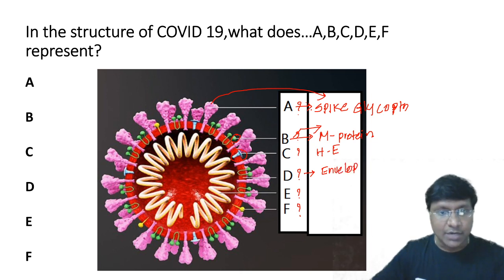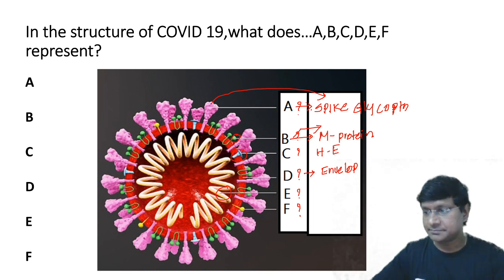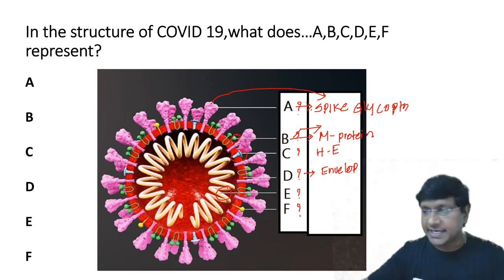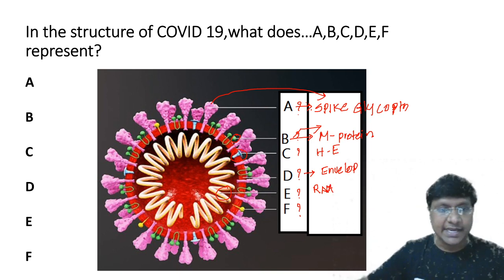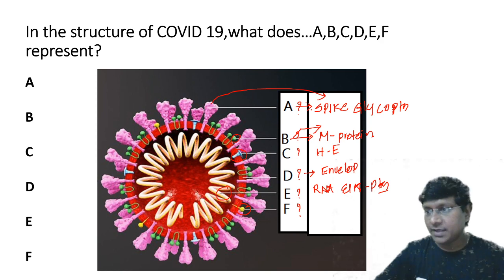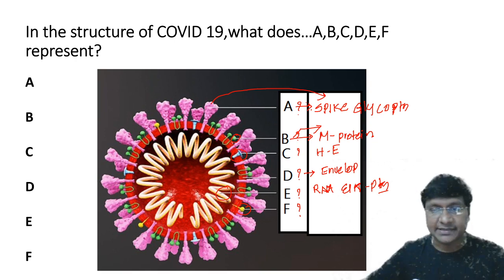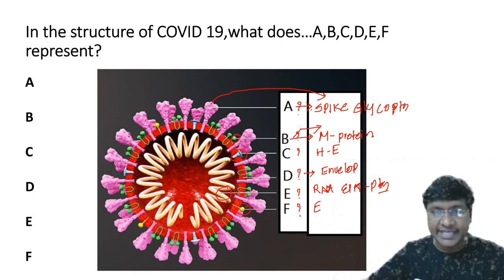Structure E is your single-stranded RNA nuclear material along with the N protein — RNA and N protein together. Structure F is the yellow color structure — it is your E protein.